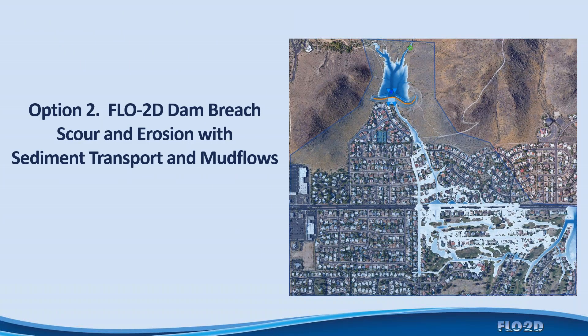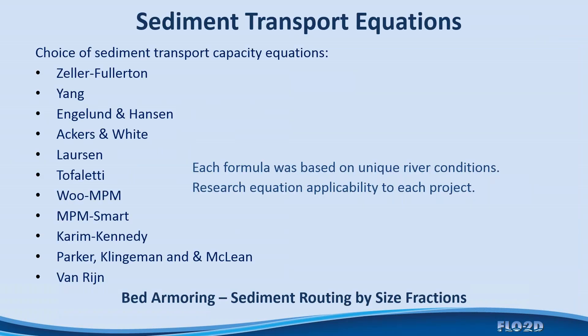The second option is dam breach failure, where you can either do a prescribed failure with different vertical and horizontal rates of failure, or actually predict the scour and erosion of the dam itself and the tailings behind the dam using sediment transport and mudflow modeling.